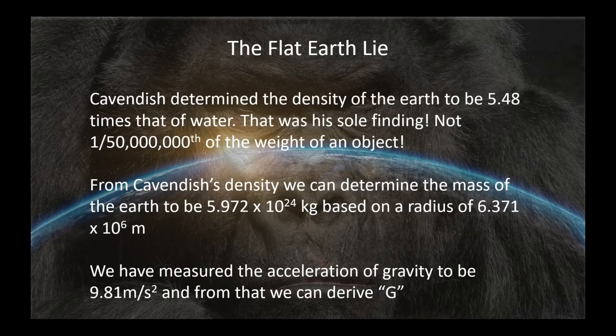From Cavendish's density, we can determine the mass of the earth to be about 5.972 × 10^24 kilograms. And that's based on a known radius of 6.371 × 10^6 meters. We can measure the acceleration of gravity and we do it all the time. It always comes out 9.81 meters per second squared at sea level in a vacuum. Always.